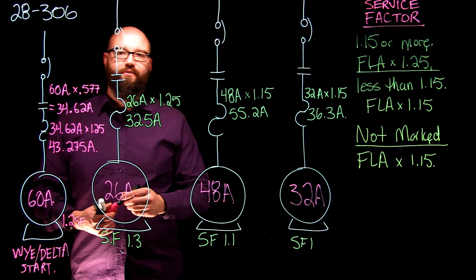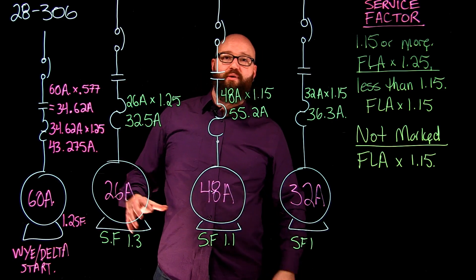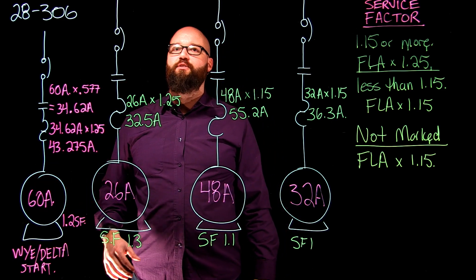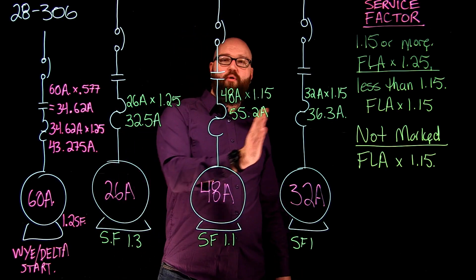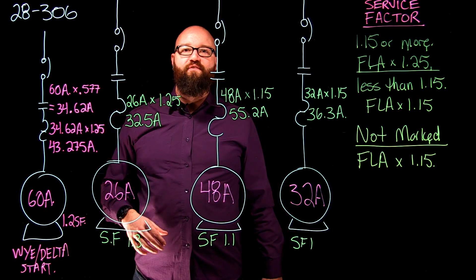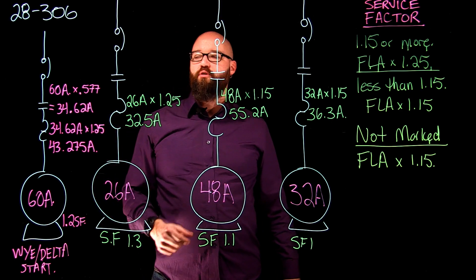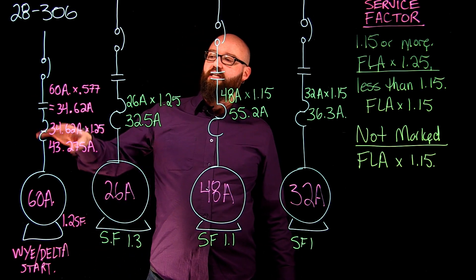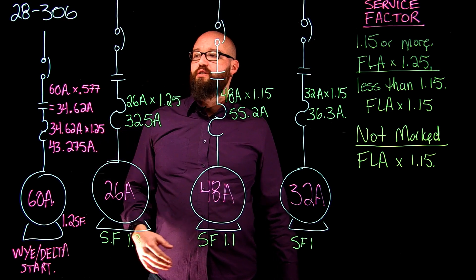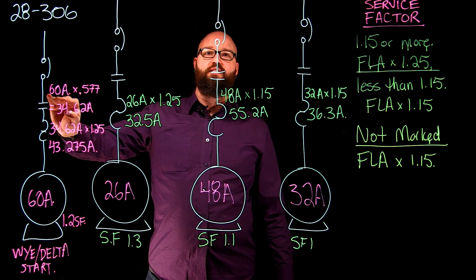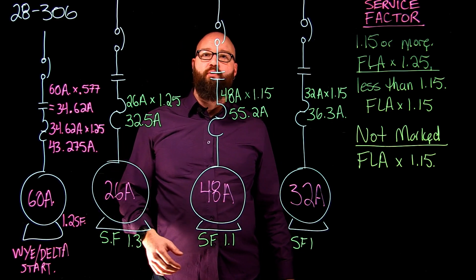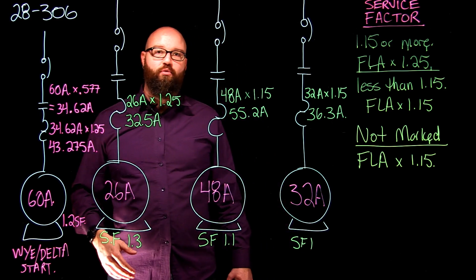So a little bit different on that one. But remember, if you are sizing the overload it must be off the phase current in that delta configuration. Our other three motors we're just using that straight FLA which is the line current to our motors, and again this one we're switching over to the phase current. Another way that we can get this root 3 smaller current is actually taking our line current of 60 amps and dividing it by root 3, or we can divide it by 1.732, which is the square root of 3 as well.